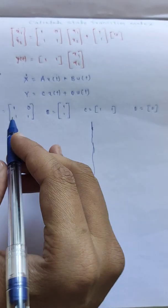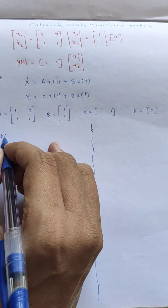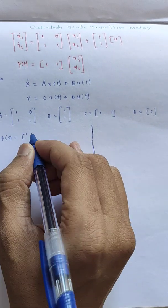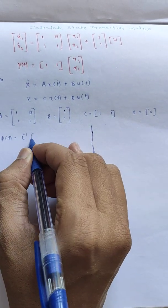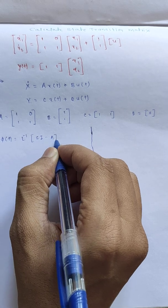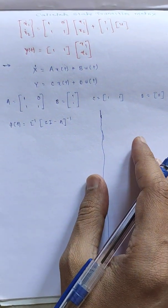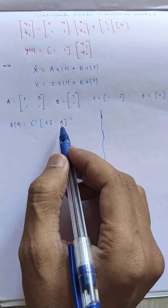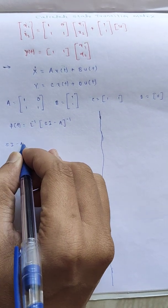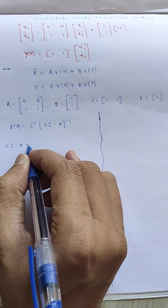Now we have to calculate the state transition matrix, which is given by φ(t) equal to the inverse Laplace transform of (sI minus A) inverse. So first we will calculate sI minus A.